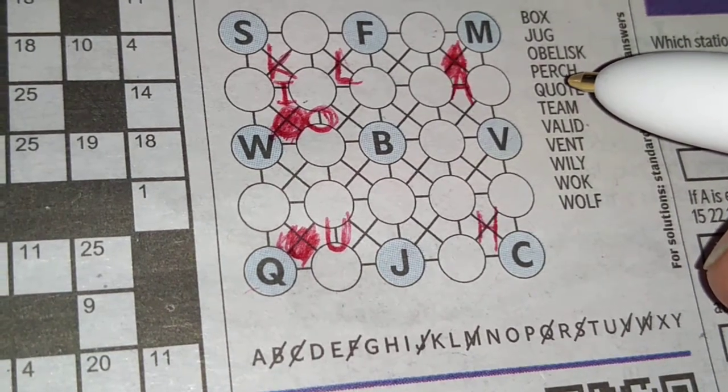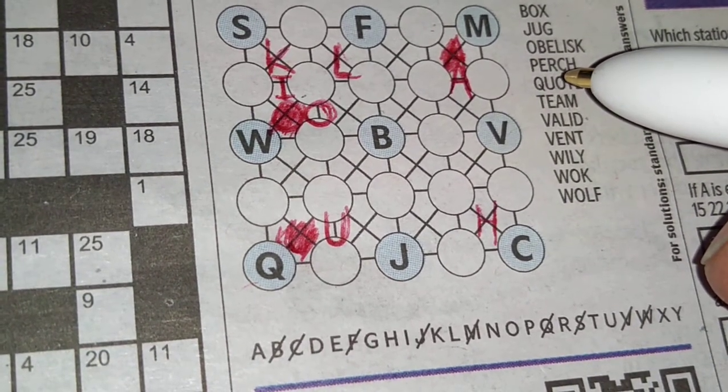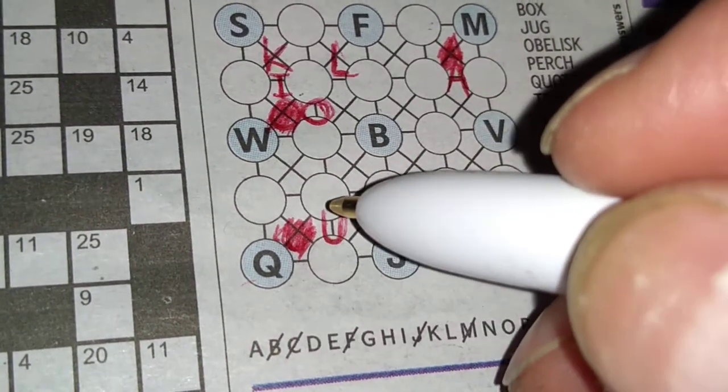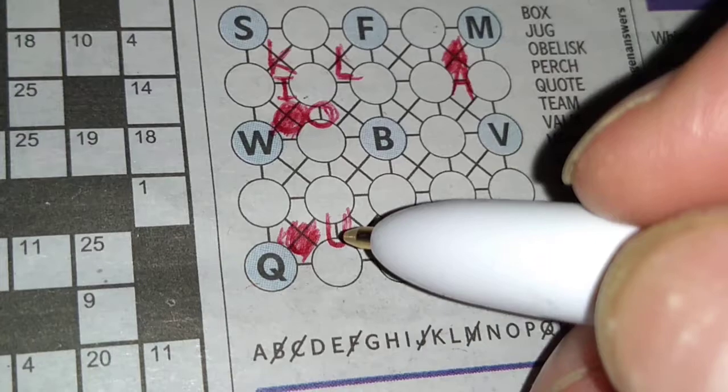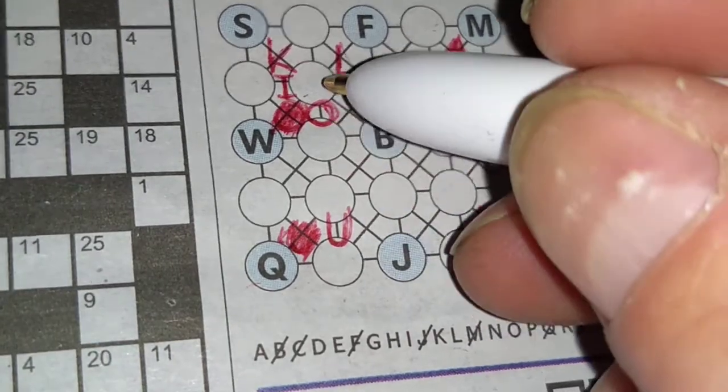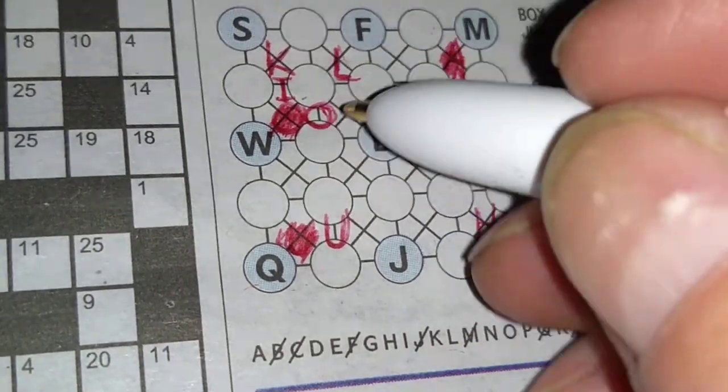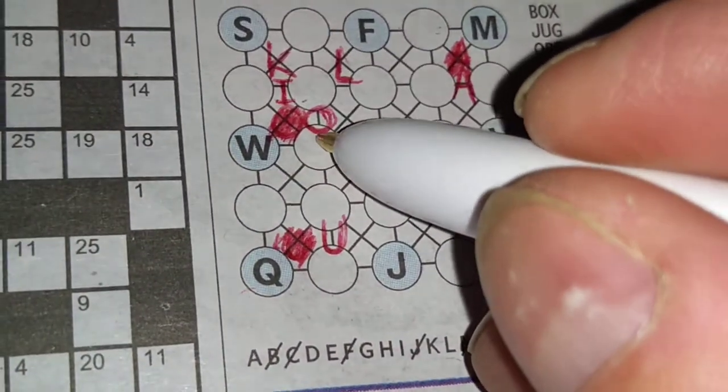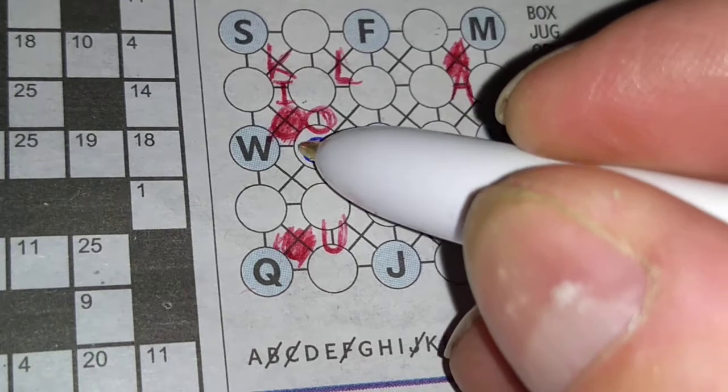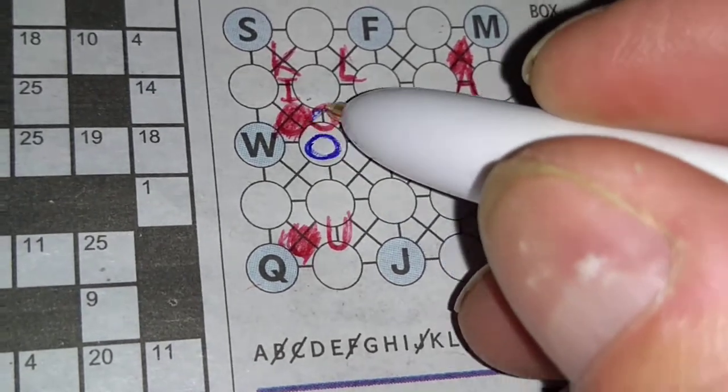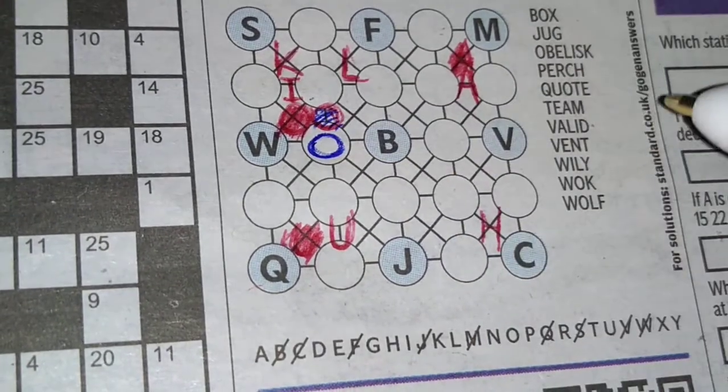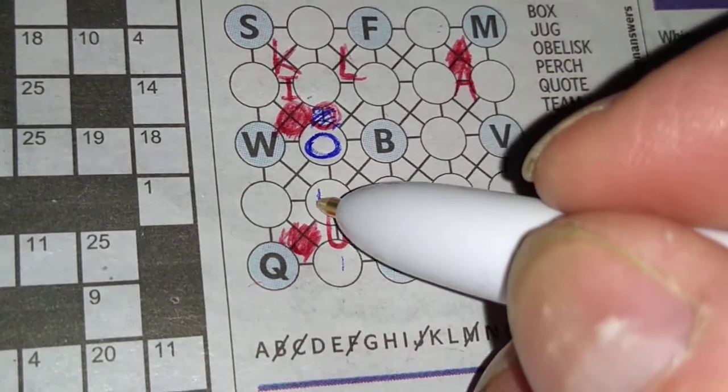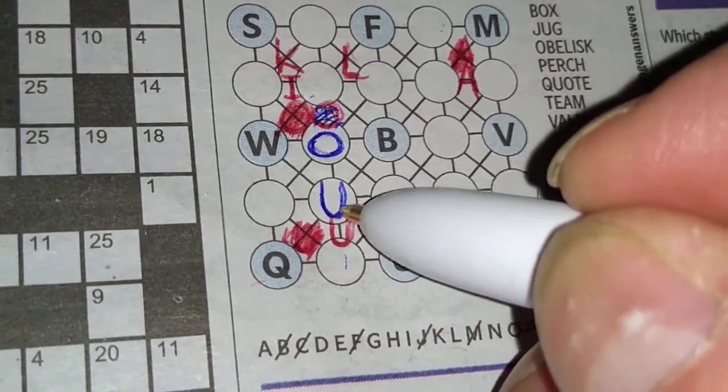And now perch. Nothing. Quote, well, the Q, U, the O, the U is one of these, so the O can't be further away than this. So that is where the O is now. So let's link it in. So we know that the O is there. And in fact, the U can't be here, so we know where the U is as well. So we've got quote.